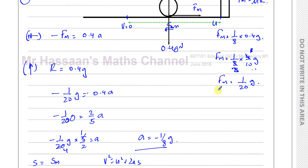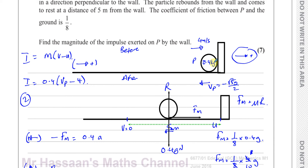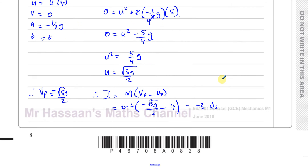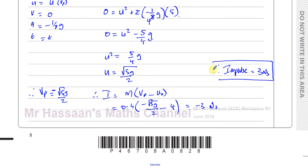The unit of impulse is newton-seconds. What we've found is the change in momentum of the ball — i.e., the impulse exerted on P by the wall, which acts in the direction of the rebound. The question asks for the magnitude, so we drop the negative sign. The magnitude of the impulse is 3 newton-seconds. Don't include the negative sign — if asked for direction, state it's opposite to the initial motion.